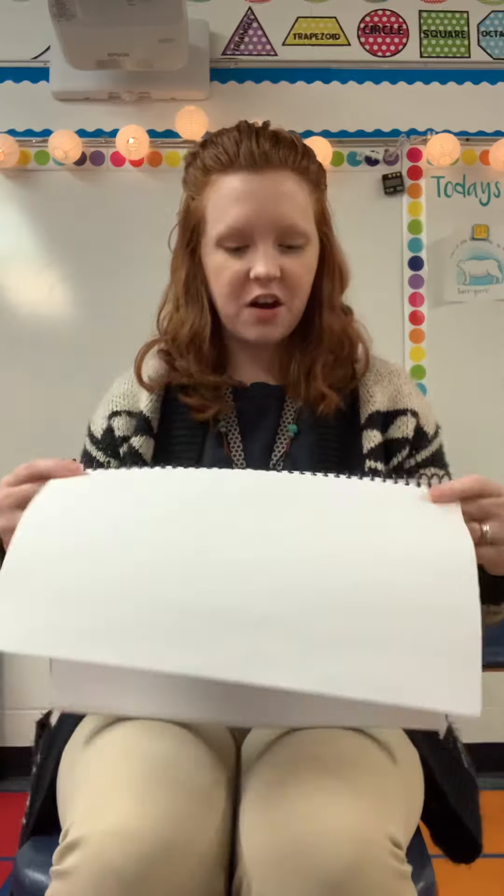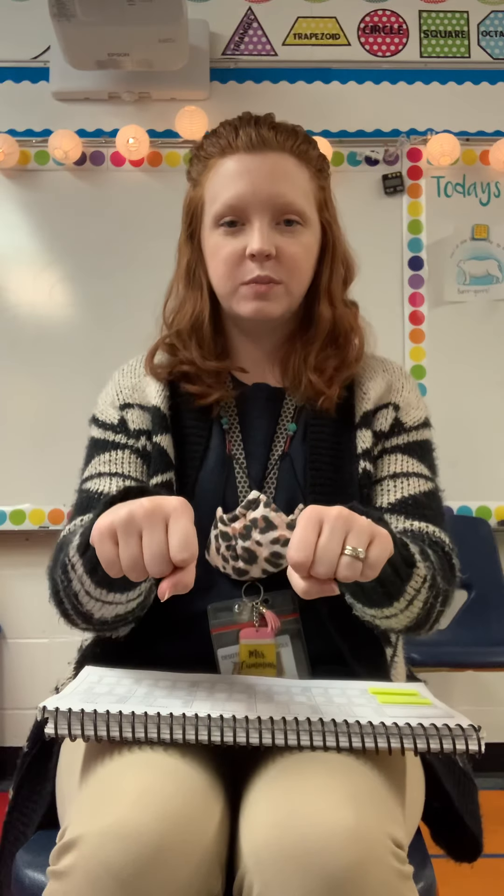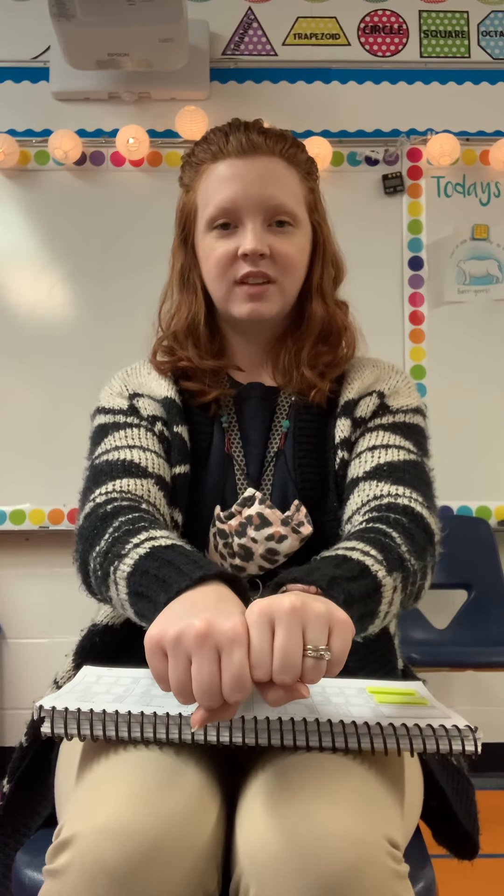Moving on, our next word game — I'm going to tell you to say the ending of a word, then we're going to add the beginning of the word, and put those two together to make a full word. Say 'ale' — add m to the beginning, and you get 'male'. Next, say 'in' — add t to the beginning, and you get 'tin'. Next, say 'um' — add g to the beginning, and you get 'gum'. And our last one, say 'ought' — add n to the beginning, and you get 'not'.